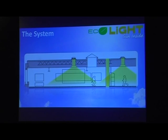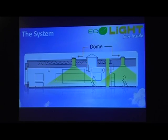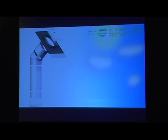This is how the system works. If you cut the building, there is Ecolight installed. The roof part has a dome which channels the light through the tube, and then distributes the light through the diffuser.